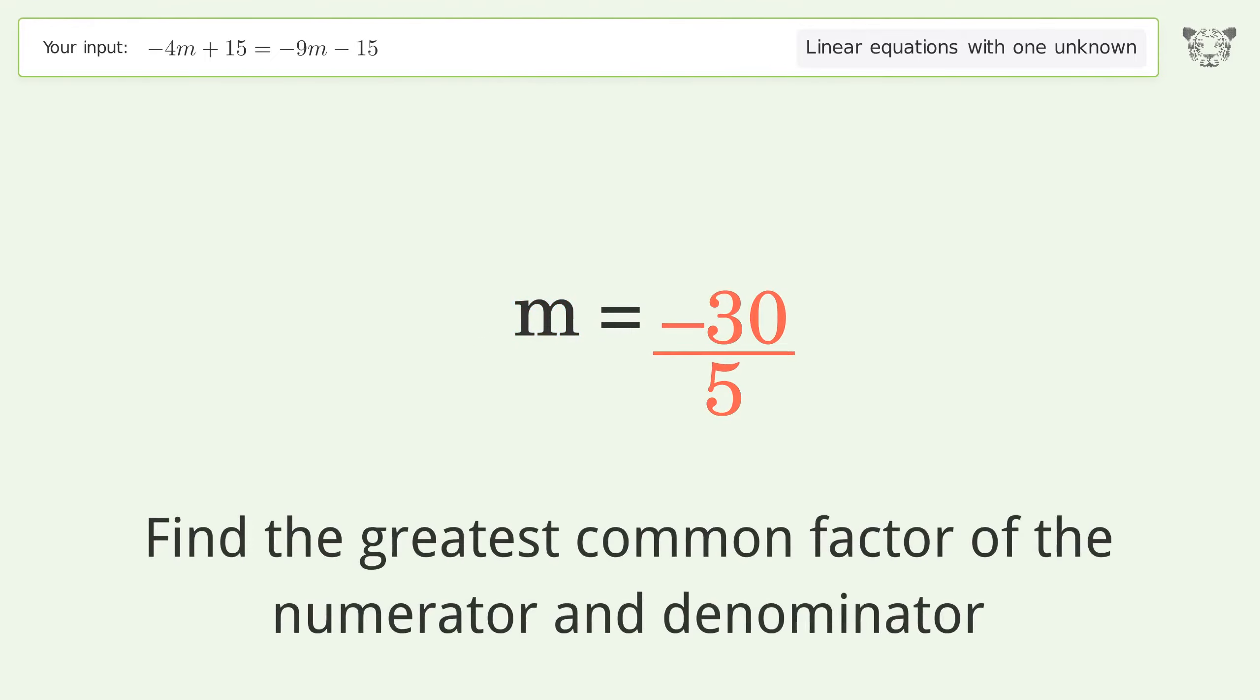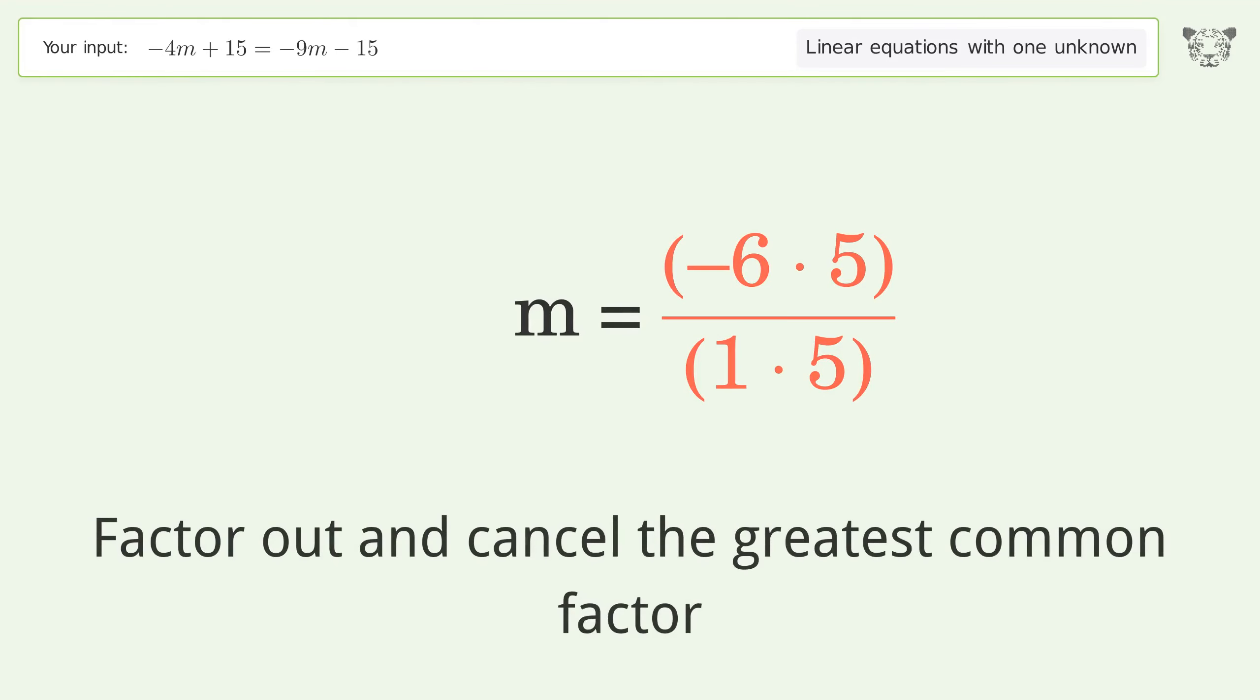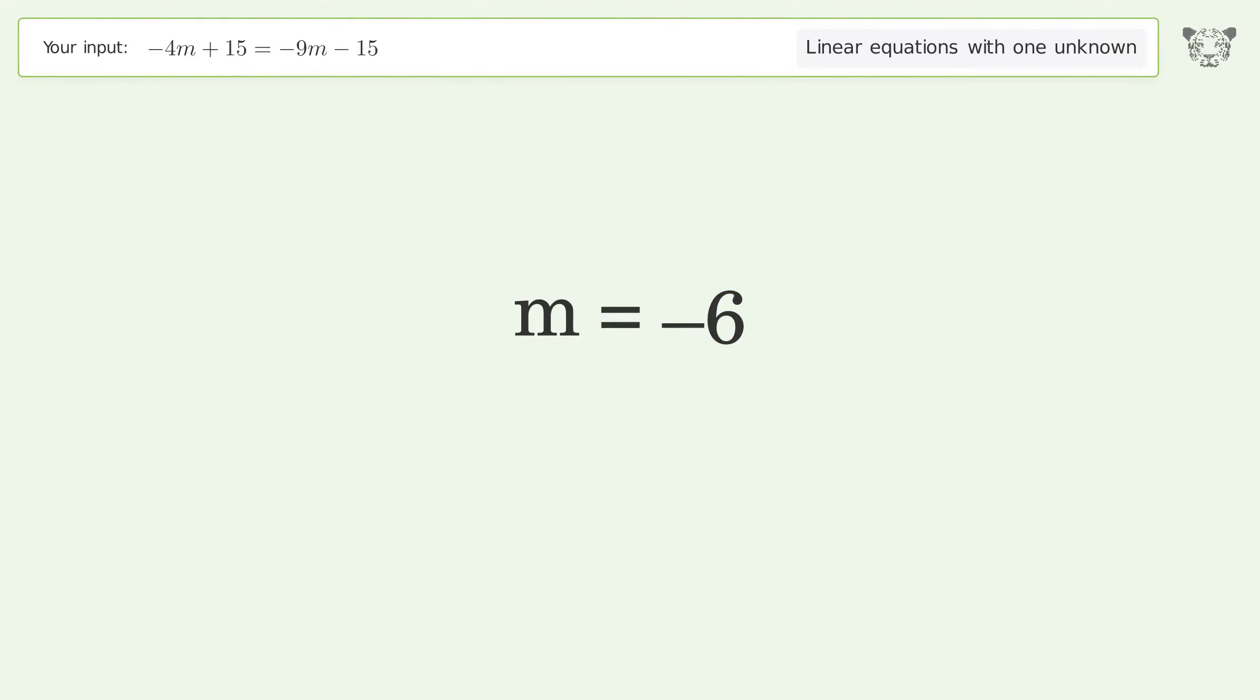Find the greatest common factor of the numerator and denominator. Factor out and cancel the greatest common factor. And so the final result is m equals negative 6.